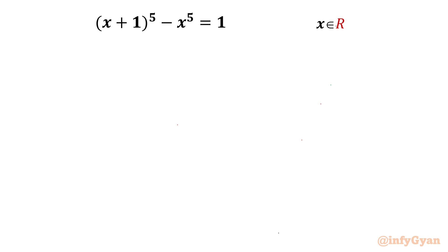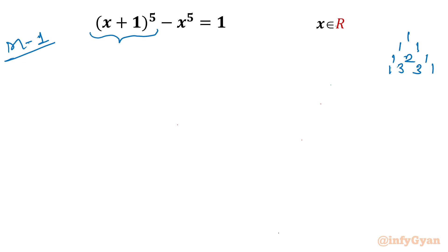I will demonstrate two different methods to solve this problem. I will begin with Method 1 using Pascal's triangle to find the coefficients for expanding (x+1)^5. The rows are: 1 1; 1 2 1; 1 3 3 1; 1 4 6 4 1; and the last row 1 5 10 10 5 1 — these are our coefficients for the power 5 expansion.